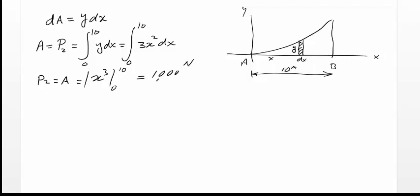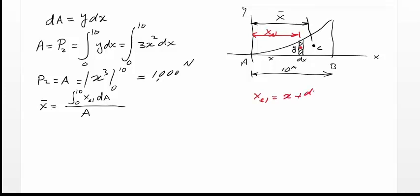Next, we need to find out x bar. If the centroid of the parabola is here, the distance from y-axis is x bar, and according to the formula, x bar equal to integral of 0 to 10, x sub-element dA divided by area. x sub-element, by definition, is the distance from y-axis to the centroid of the element we have chosen, equal to x plus dx times x over 2. However, dx goes to 0, so must be equal to x.